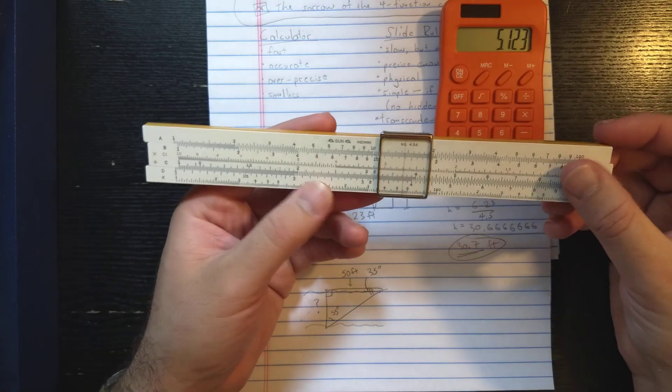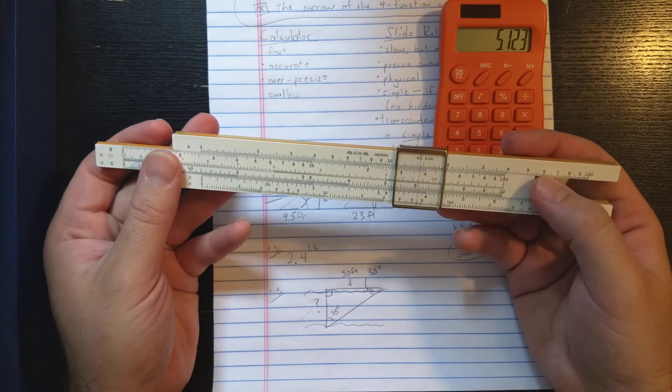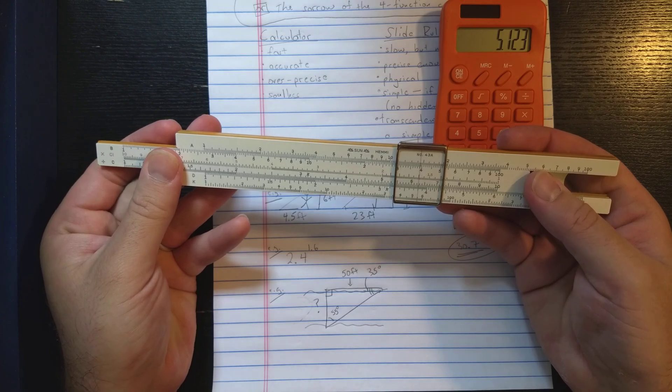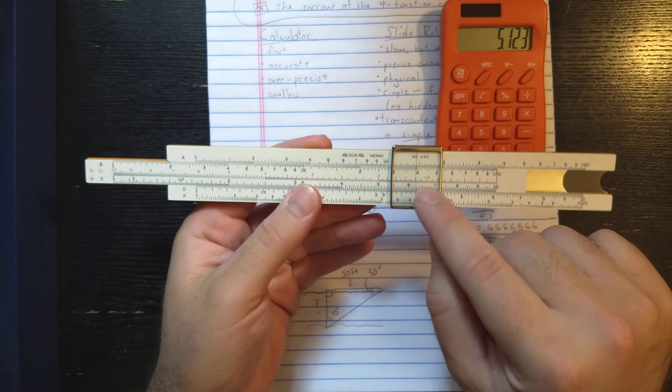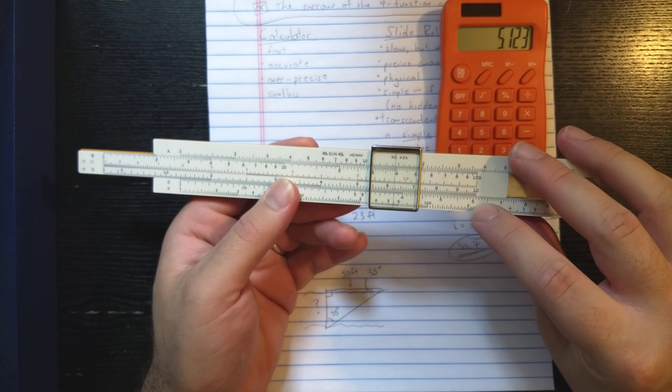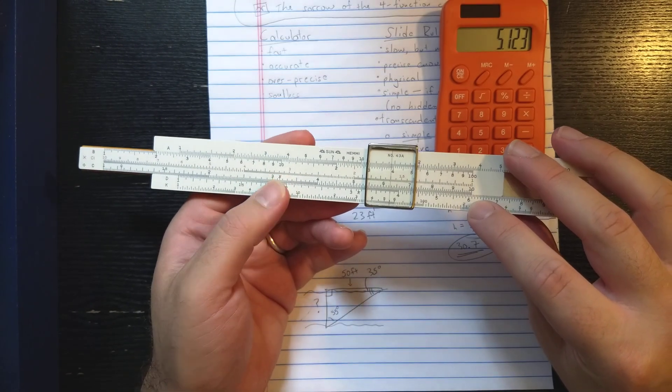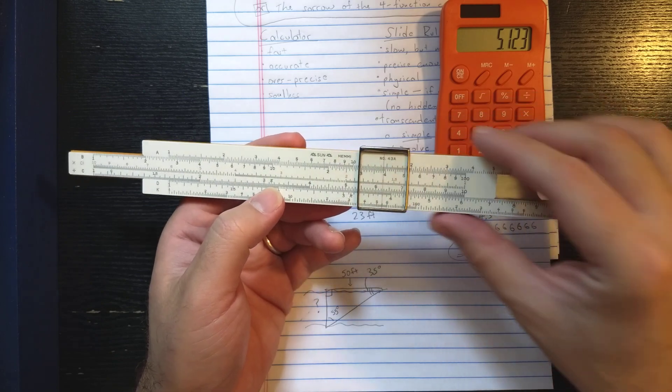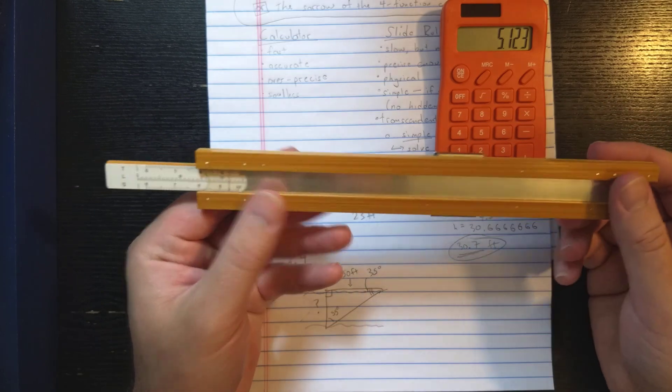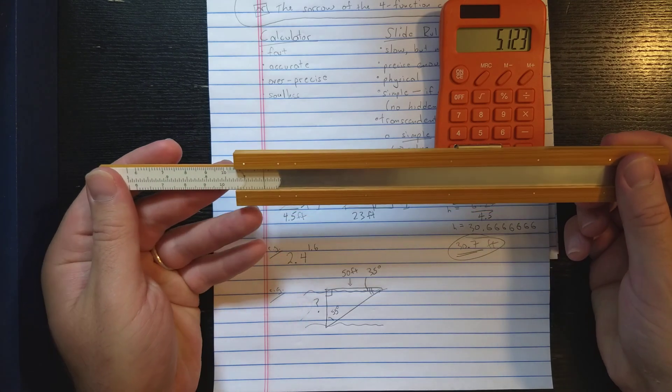So times 1.6. I'll use CI. There's 1.9. There's 1.6. So result there looks like 0.608 or so. 608.